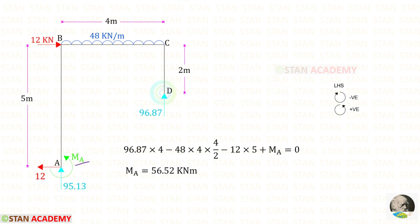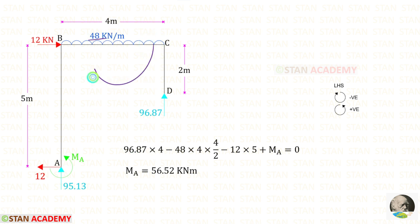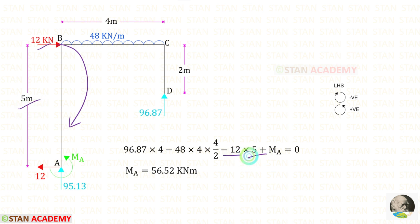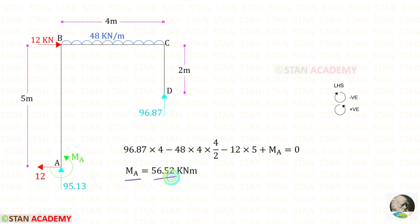To find MA, let us take moments about A from point D. VD acts in the anticlockwise direction so it is positive, with distance 4. The UDL acts in the clockwise direction so it is negative — we multiply the distance and then the distance by 2. The point load also acts in the clockwise direction, so it is also negative, with distance 5. We assume MA is a hogging moment, so it acts in the anticlockwise direction and is positive. For MA we get a positive value, which confirms our assumption: MA is a hogging moment.